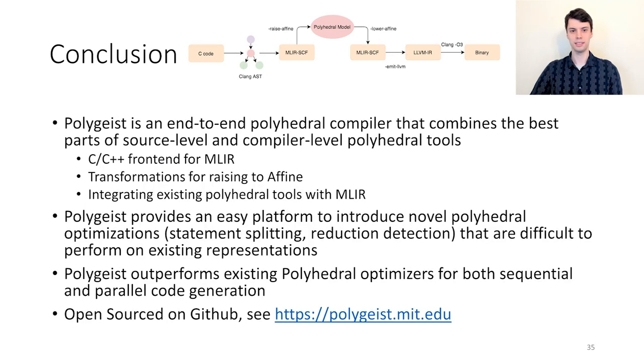In conclusion, Polygeist is an end-to-end polyhedral compiler that combines the best parts of source-level and compiler-level polyhedral tools. This includes a C and C++ frontend for MLIR, a set of transformation passes for raising to affine, and integrating existing polyhedral tools within MLIR. Because Polygeist spans the abstraction barrier, it provides an easy platform to introduce novel polyhedral optimizations such as statement splitting and reduction detection, which are difficult to perform on existing representations. Together, this allows Polygeist to outperform existing polyhedral optimizers on both sequential and parallel code generation.